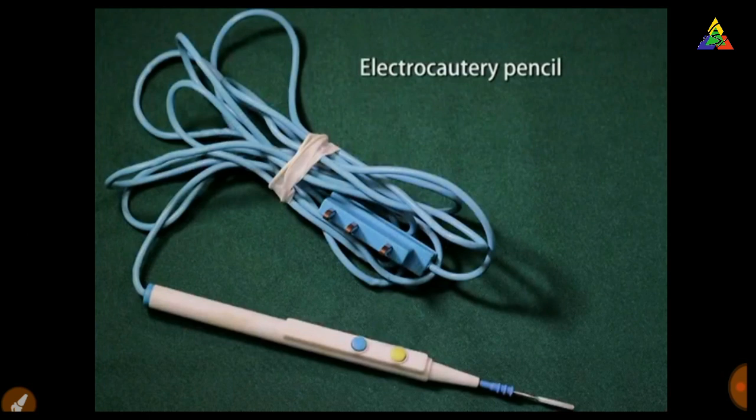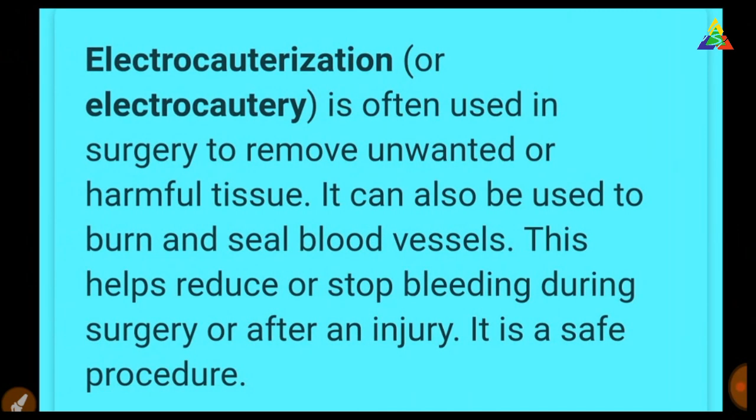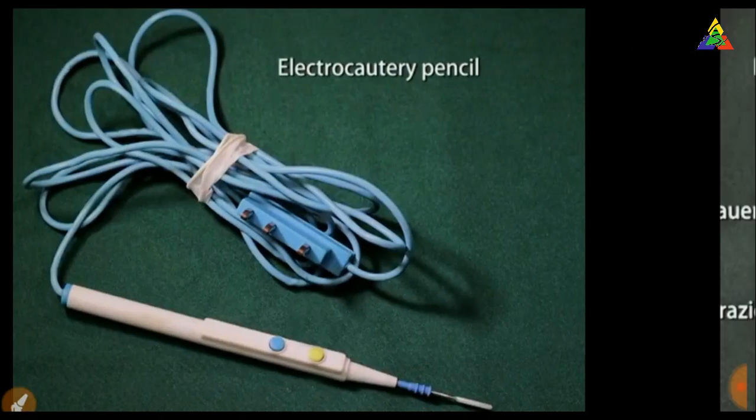What we have shown here is an electrocautery pencil. Electrocautery is often used in surgery to remove unwanted or harmful tissues. It can also be used to burn and seal blood vessels, which helps reduce or stop bleeding during surgery or after an injury. It is a safe procedure.